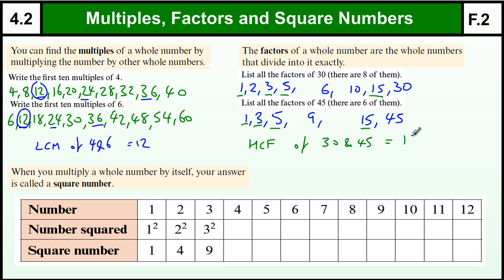Now lowest common multiple and highest common factor are not really needed at level 4 grade F, but that's the next step up. What you need to be able to do is write out multiples and list factors. Then we've got square numbers.